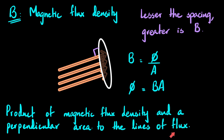The word 'flux' really means flow. When people first discovered magnets they had the idea that this was a flow of something, and that's why this quantity is called magnetic flux. You can think of magnetic flux as the total number of magnetic field lines passing through a given area — which is why it's a product: magnetic flux density is the field lines passing per unit area, so you multiply by the area to get the total number of field lines.